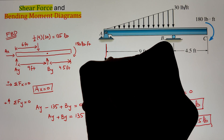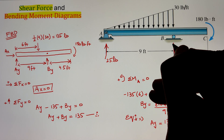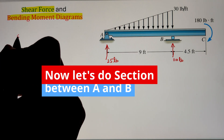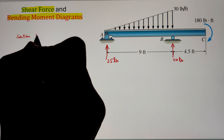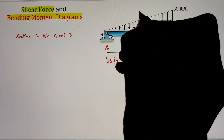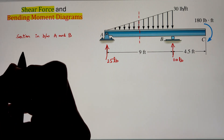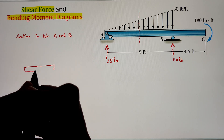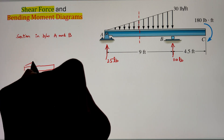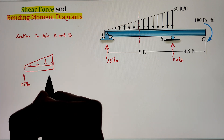Once we have our support reactions, let's apply the method of sections. In this problem we have to make two sections because of the discontinuities present, as the distributive loading is only applicable from point A to B. So we may have to make a cut in between point A and B, and next we have to make a cut in between B and C to observe how the shear force and moment are changing. Let's start with our first section in between point A and B and draw our free body diagram. Here I have a support reaction at A having an upward force of 25 pounds. After that we have a triangular distributive loading, and we have made a cut at a distance X.